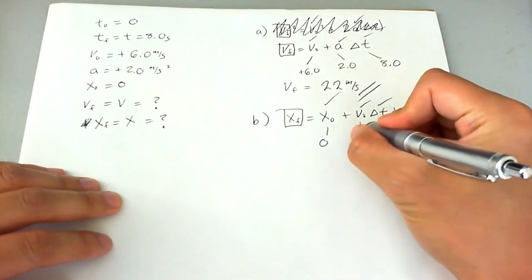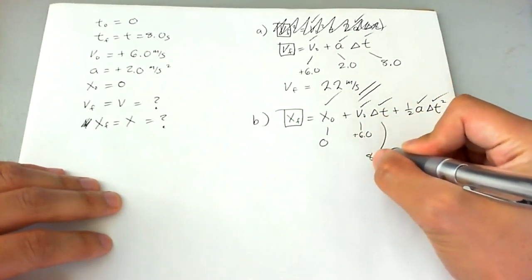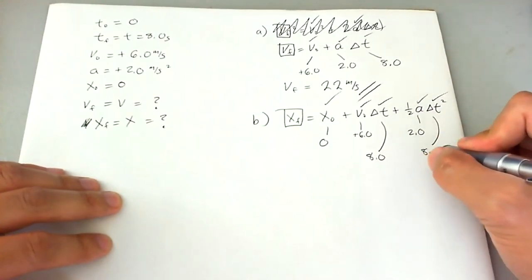So this is zero. This is positive six. This is eight. This is two. And this is, again, eight.